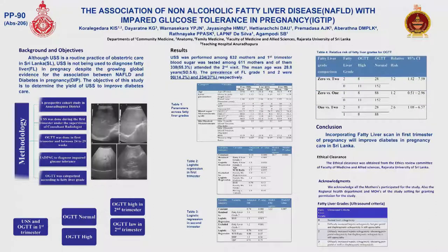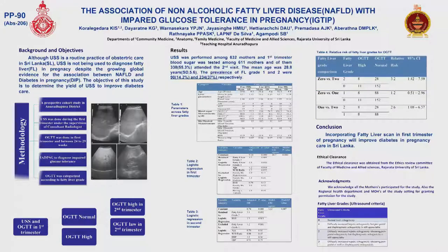From the logistic regression, we found that waist-to-hip ratio, age, and fatty liver grades one and two are significant risk factors. We then selected normal glycemic mothers from the first trimester for the second trimester cohort analysis. In the cohort analysis, we found a 3.2 times increased risk of developing diabetes among those with fatty liver grade two compared to grade zero.